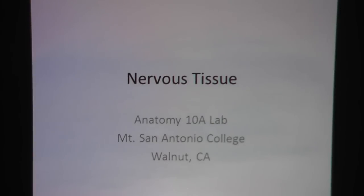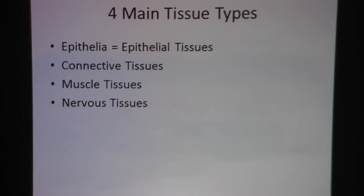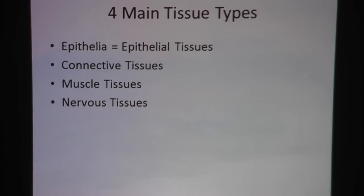Nervous tissue. This video is made for the Anatomy 10A lab at Mount San Antonio College. We have four main tissue types in the body: epithelial tissues, connective tissues, muscle tissues, and nervous tissues. We've talked about the first three already. Let's talk about the last group now — nervous tissues.